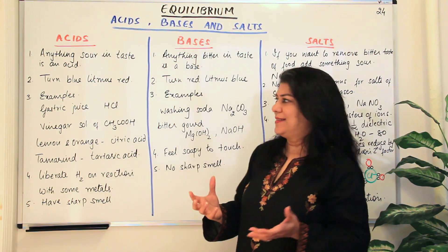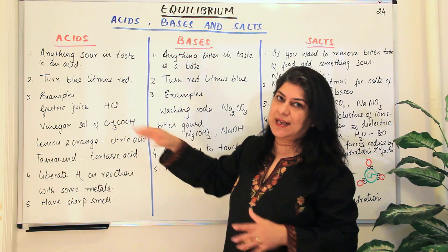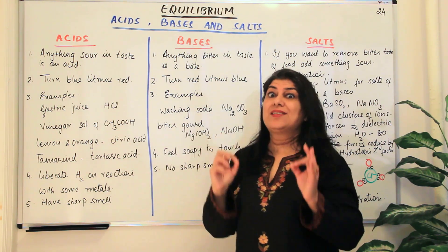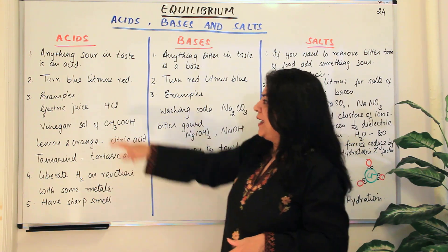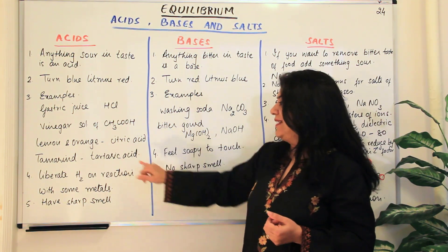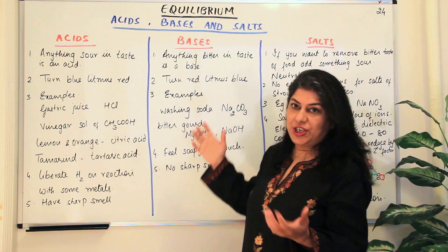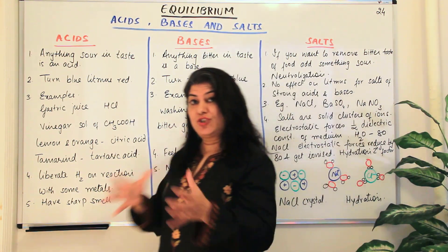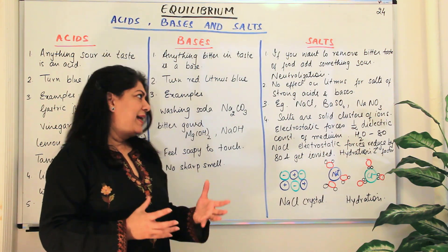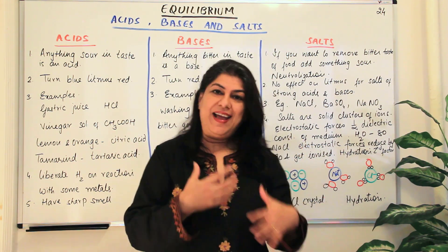There are different examples of acids and bases. Taking examples from the NCRT: gastric juice is mainly hydrochloric acid — concentrated hydrochloric acid present in your stomach. Vinegar is a solution of acetic acid. Lemons and oranges have citric acid, and tamarind has tartaric acid.